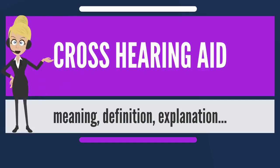A contralateral routing of signals CROS hearing aid is a type of hearing aid used to treat unilateral hearing loss. It takes sound from the ear with poorer hearing and transmits it to the ear with better hearing.